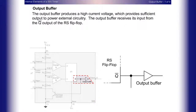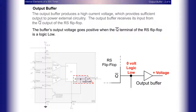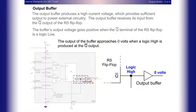Output buffer: The output buffer produces a high-current voltage which provides sufficient output to power external circuitry. The output buffer receives its input from the Q output of the RS flip-flop. The buffer's output voltage goes positive when the Q terminal of the RS flip-flop is a logic low. The output of the buffer approaches zero volts when a logic high is produced at the Q output.